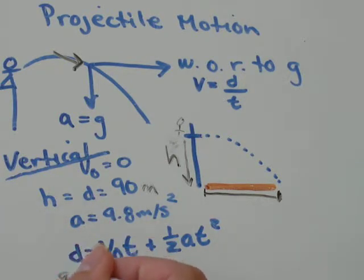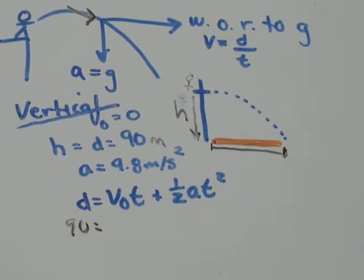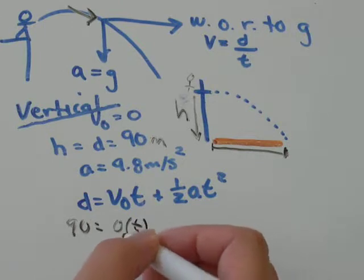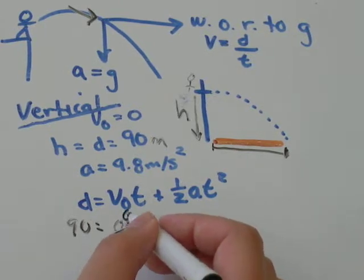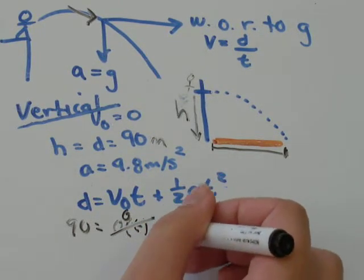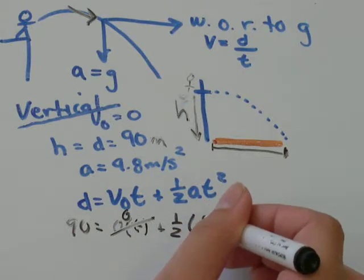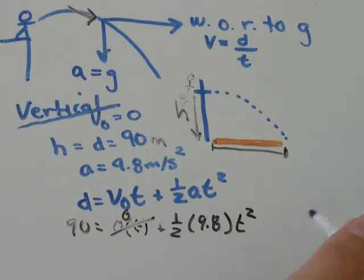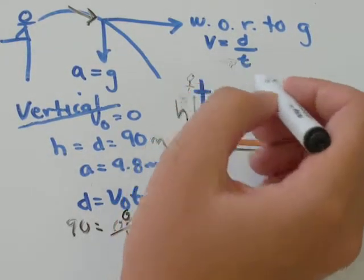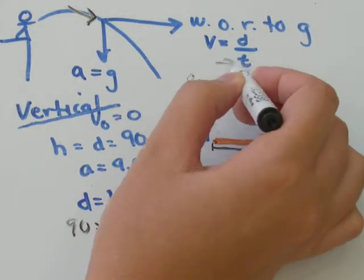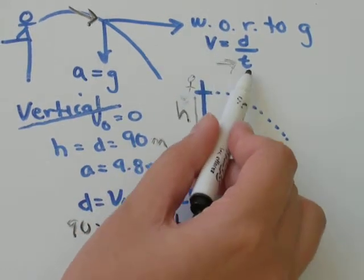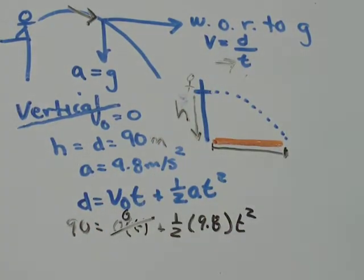We have D is 90. We have V-naught is zero. The time, we don't know, but zero times time is just going to be zero anyway. Plus one-half, acceleration is due to gravity, 9.8, and then T squared. We're solving for T because this T we can plug in here to solve for displacement because we were given the velocity in the question. Once we have T, we can solve for D.